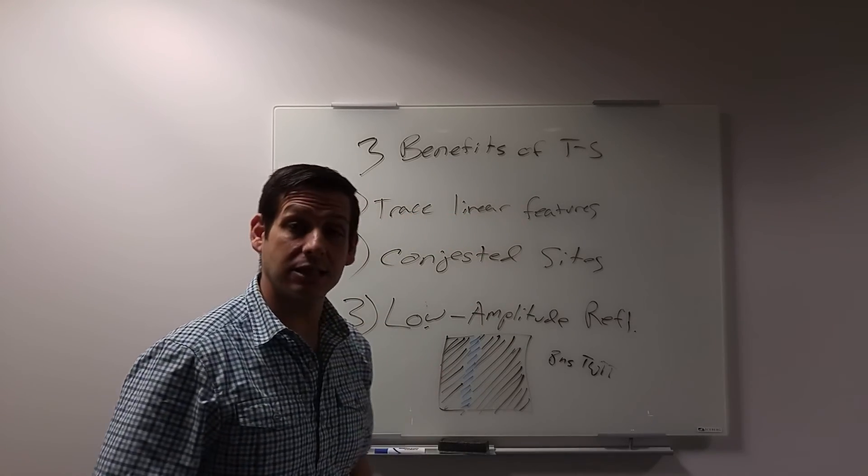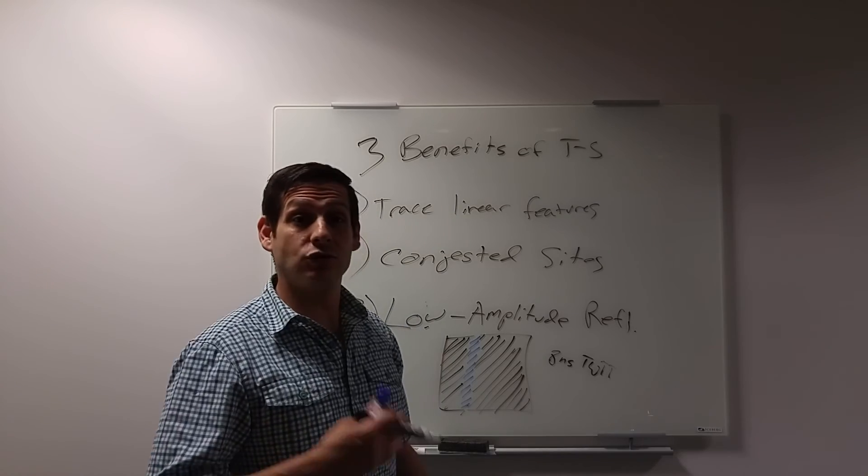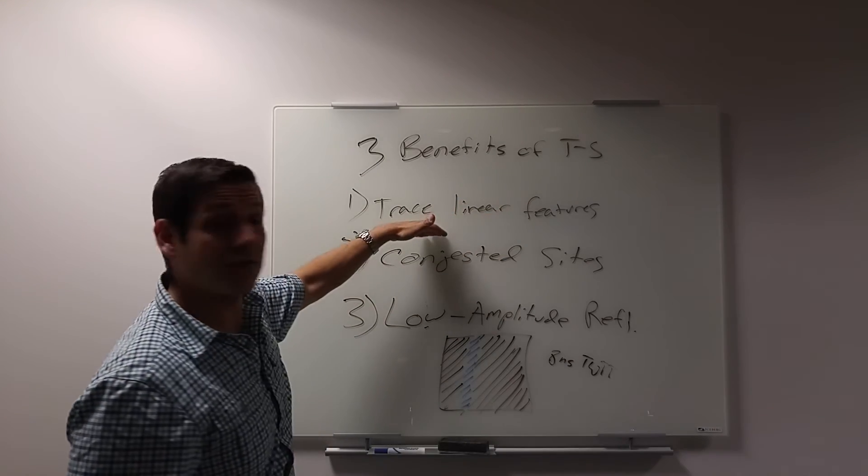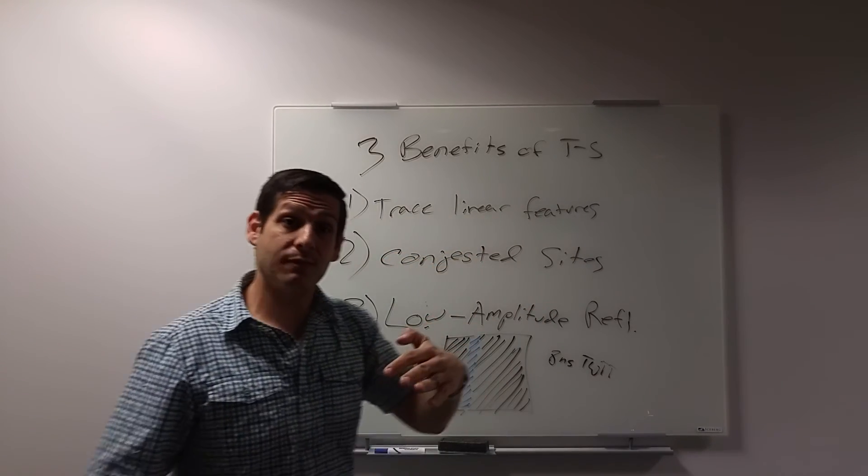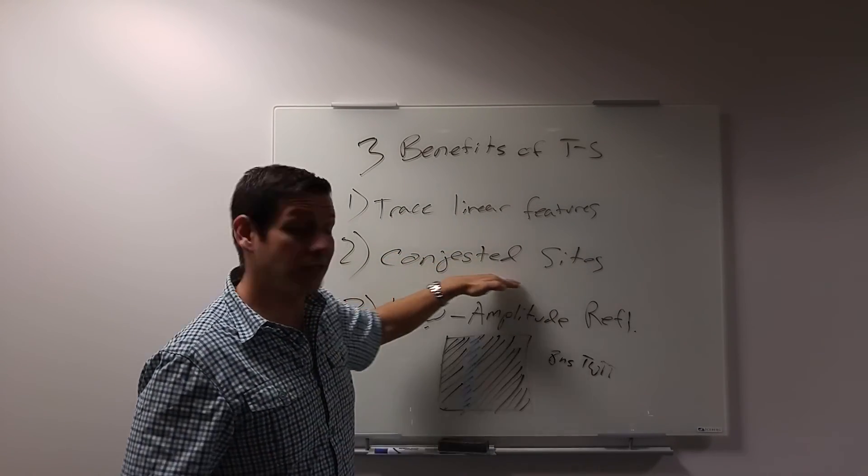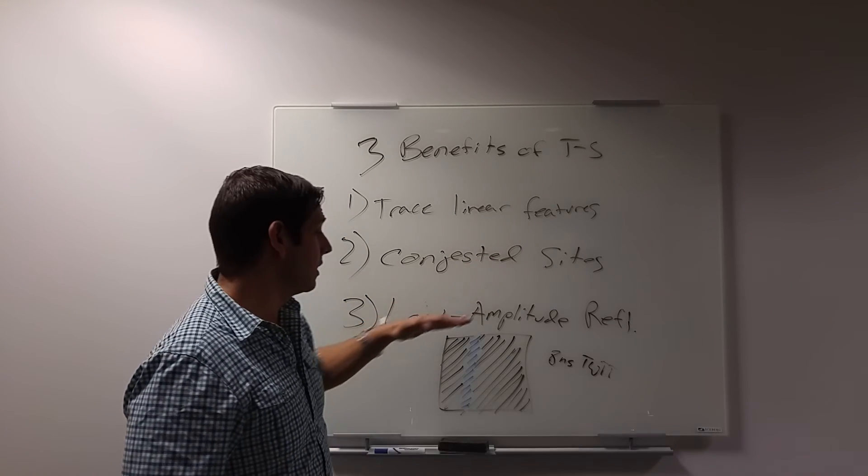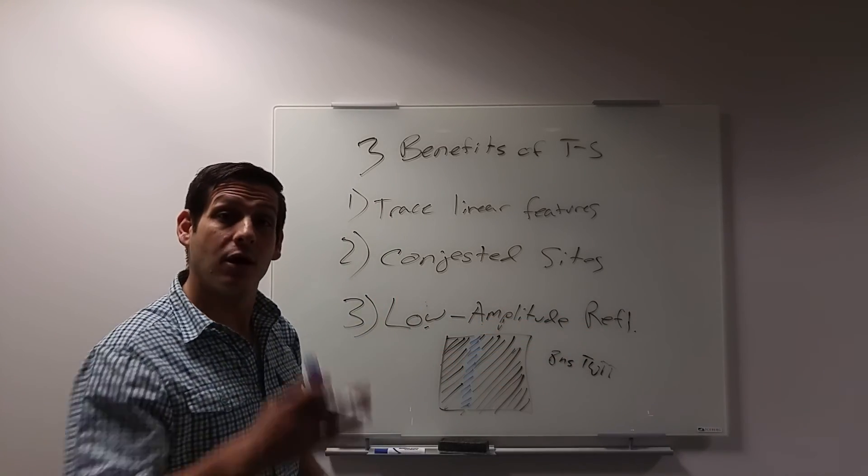So three benefits of time slices. Be cautious not to rely on time slices. Be cautious not to use them because they sometimes are prettier. Use them when they're appropriate. And in these three cases, tracing linear features, especially that might be bending, is appropriate. Using them on congested sites can be a big help. And using them to identify low amplitude reflections can be a help.